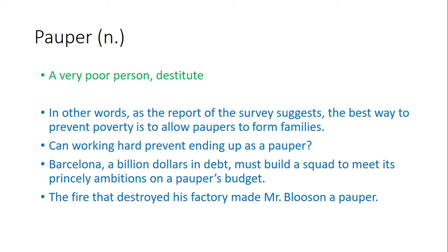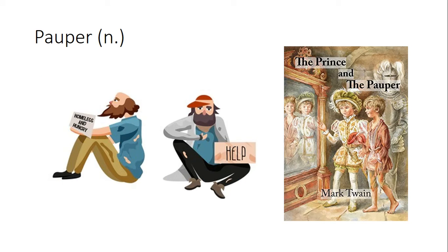Pauper — it's a noun meaning a very poor person, a destitute person. Examples: Number one, the best way to prevent poverty is to allow paupers to form families. Number two, can walking out prevent ending up as a pauper? Number three, Barcelona, a billion dollars in debt, must build a squad to meet its princely ambitions on a pauper's budget. Number four, the fire that destroyed his factory made Mr. Blossom a pauper — as in 'The Prince and the Pauper' by Mark Twain.